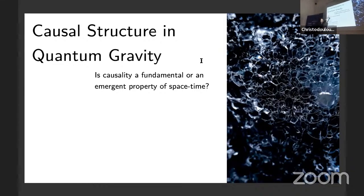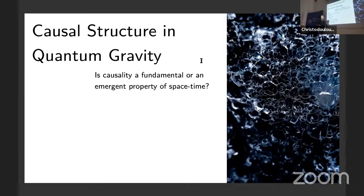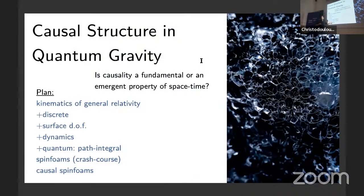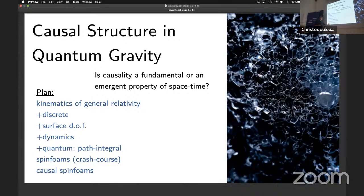This is the question we want to investigate. The general framework is as follows: I will start with basic general relativity, explaining what I mean by causality there, and then we will slowly go towards spin foams. Spin foams are a formulation of covariant loop quantum gravity, and these are eventually the models we want to look at. We'll go progressively from GR to spin foams through different steps: first introducing discreteness, then surface degrees of freedom, then dynamics, and then quantum.